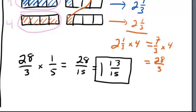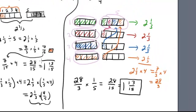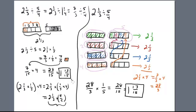I'll take my 28 thirds — that's enough for five dresses — but I just need one dress. So I'll multiply by 1 fifth, and that gives how much there is in one dress: 28 fifteenths, which is 1 and 13 fifteenths. The result matches exactly the model on the other side. It's really your choice which method you like best, but knowing both is valuable because different students may prefer different approaches.